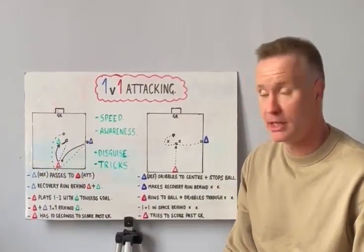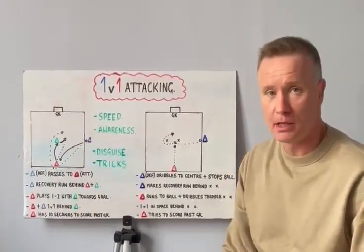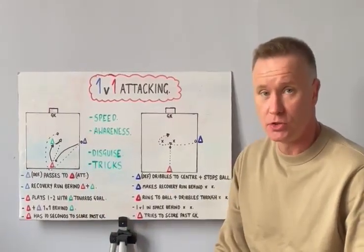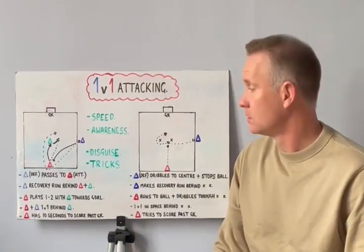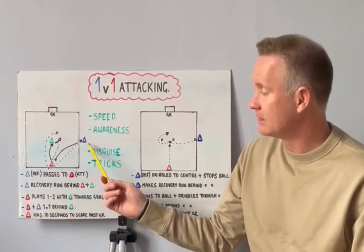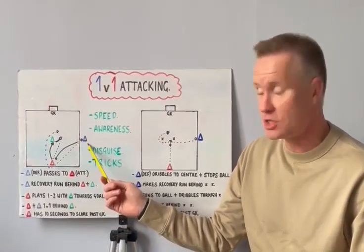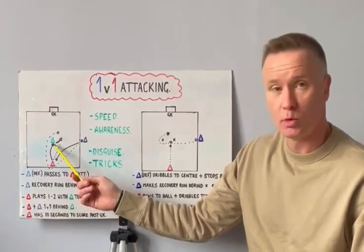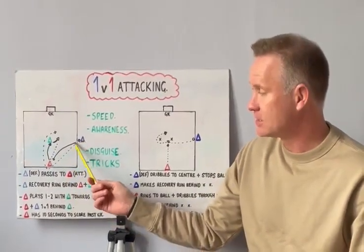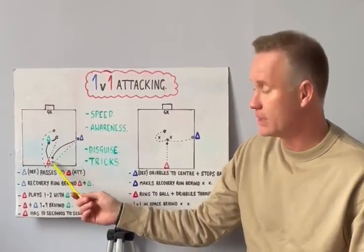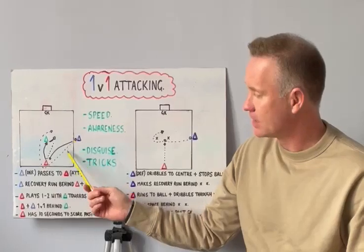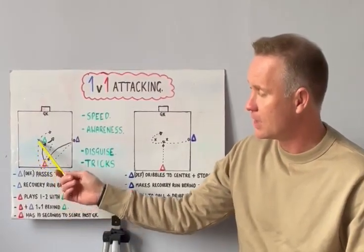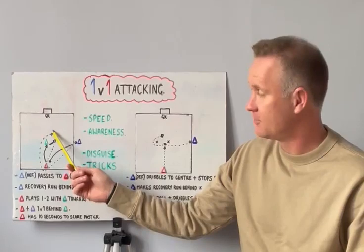Square-shaped game area, goal and a goalkeeper at one end. If you don't have a goalkeeper, you can just use a small mini goal. We have the defender on the side with a ball, an attacker here, and a support player here. The defender is going to pass the ball into the attacker and make a recovery run round the back of the support player and defend the goal.